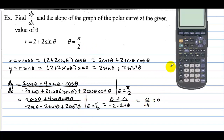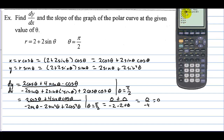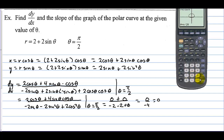Let's verify that on the calculator. We go to mode and put the calculator into polar form. In y equals, 2 plus 2 sine theta is our equation. When we graph this and calculate the derivative at theta equals pi over 2, the calculator confirms the derivative is actually 0.